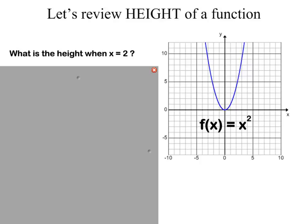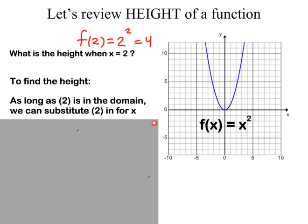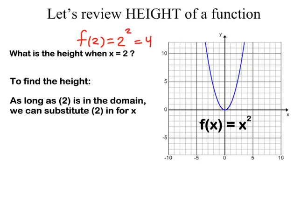Now, when we talk about height of a function, again remember, we're talking about the y value. So what's the height of this function when x equals 2? Well, the function is x squared, and when x equals 2, 2 squared is 2 times 2, which is 4. So the height when x equals 2, all we need to do is plug in 2 into our function and square it, and we get 4. So the intended height or the actual height when x equals 2 is 4. So as long as 2 is in the domain, it's easy. We can just substitute it in and figure out exactly how high the graph is.